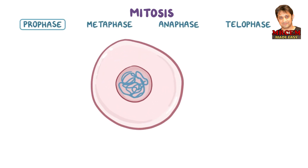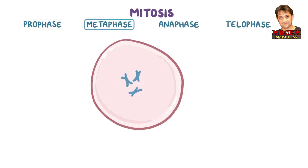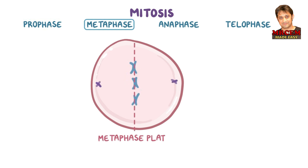During prophase, the membrane around the nucleus disintegrates, and the chromosomes condense. During metaphase, chromosomes move toward the middle of the cell on a line called the metaphase plate.